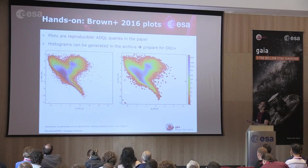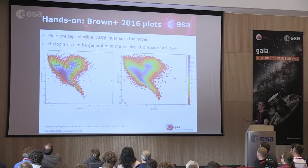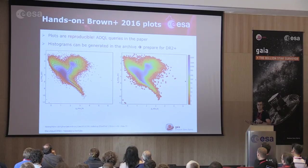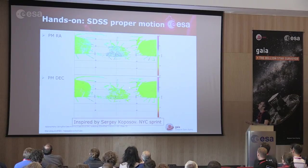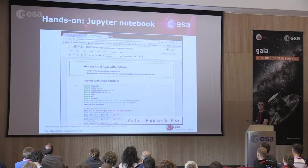We will reproduce some plots from Anthony Brown's paper and also see how to do it for DR2. A plot that was simple to do in TOPCAT with a million points may be difficult or impossible with a billion points for Gaia DR2 — but in the archive you can pre-compute a histogram and then download it once it has been constructed. There is also an example of how to do proper motions with TGAS and how to access the Gaia data via Python.